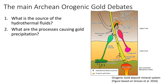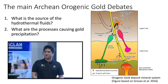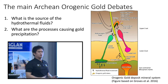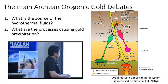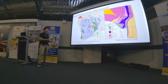The second main question concerns the processes that cause gold precipitation itself. Different famous models include fluid-rock interaction, seen for example at Mount Charlotte, the fault valve process put forward especially by Stephen Cox, and ideas about fluid mixing from oxidized and reduced fluids causing gold precipitation. I will be using the Kanoona Bell deposit to answer these questions.